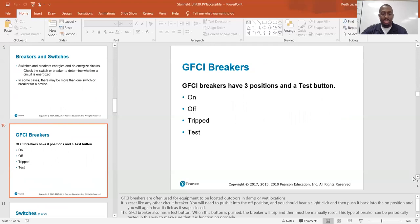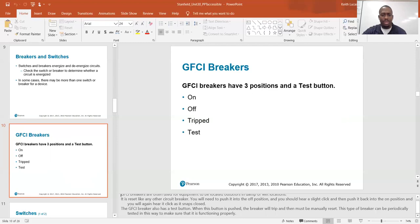GFCI breakers. GFCI breakers are often used for equipment to be located outdoors in damp or wet locations. It is reset like any other circuit breaker. You will need to push into the off position and you should hear a slight click, and then push it back into the on position and it is reset. You will again hear a click as it snaps closed. The GFCI breaker also has a test button. When this test button is pushed, the breaker will trip and then must be manually reset. This type of breaker can be periodically tested in this way to make sure that it is functioning properly.